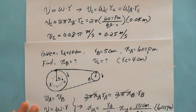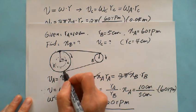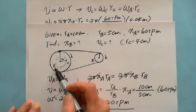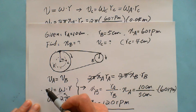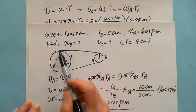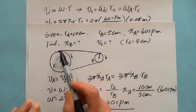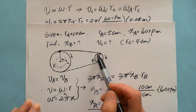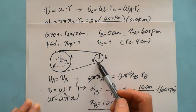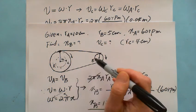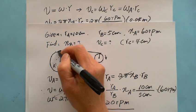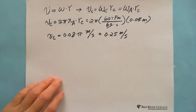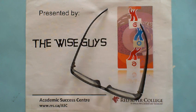So for this question: on the same wheel, all points rotate at the same number of revolutions — they have the same omega, so omega A equals omega C. But on different wheels connected by a belt, the tangential velocity at the rim will be the same. Note that this applies to points on the edge of the pulleys. This video is presented by Wise Guys. Thank you.